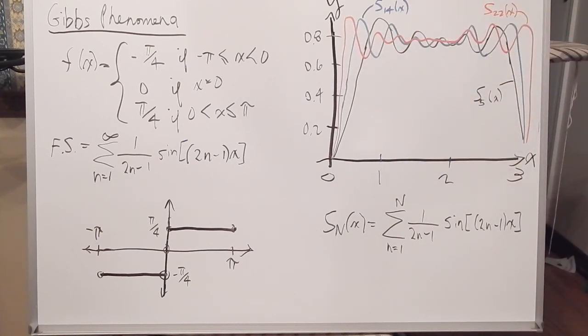The partial sums do indeed have the function as a limit, but not in the way one might expect. And this is the Gibbs phenomenon.